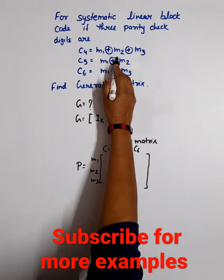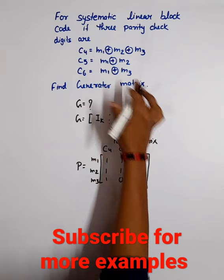For C5, M1 and M2 are available, giving 110. For C6, M1 and M3 are available, giving 101.